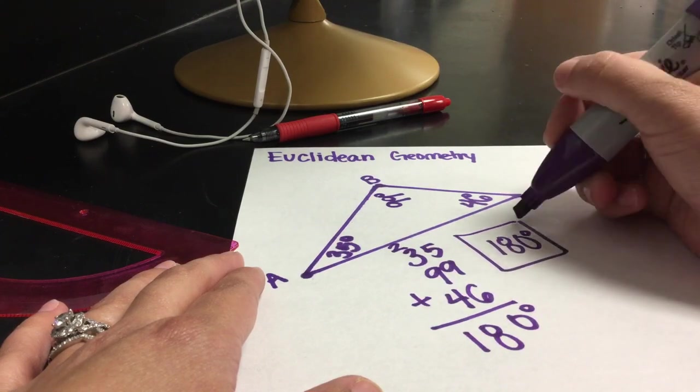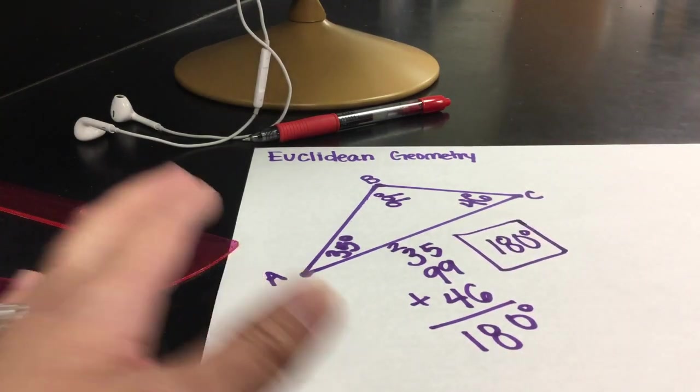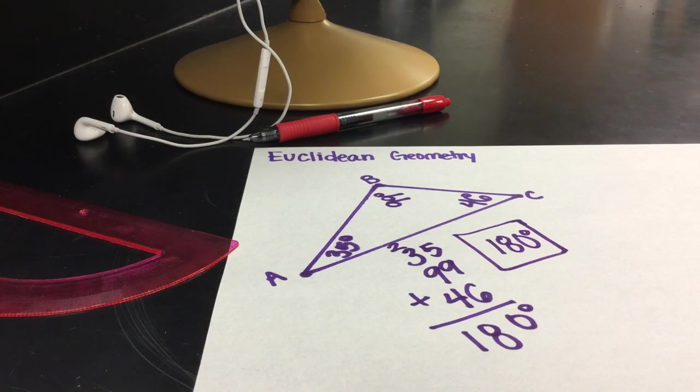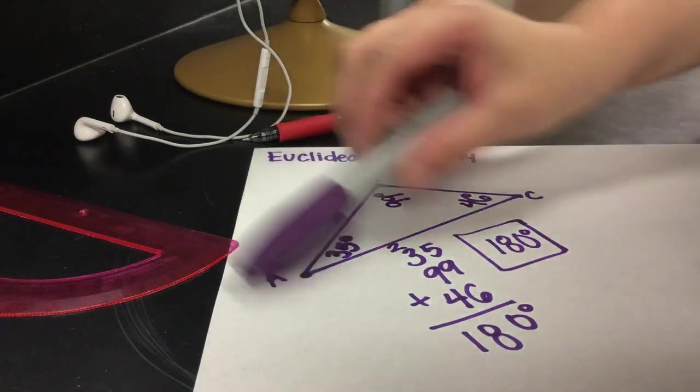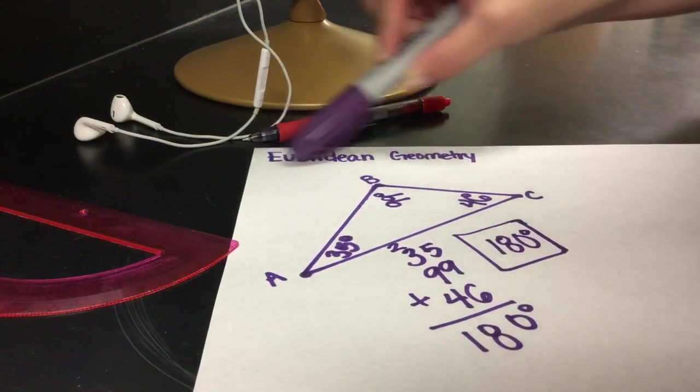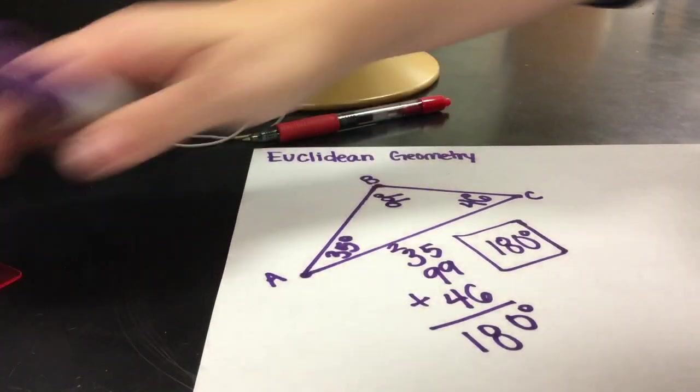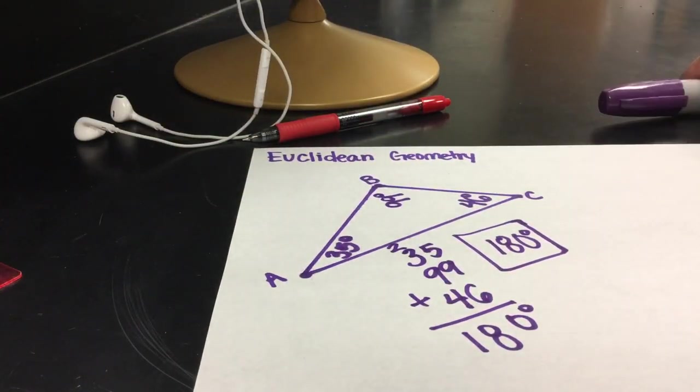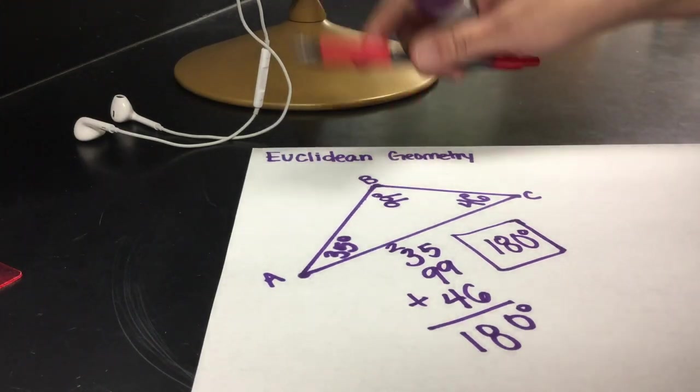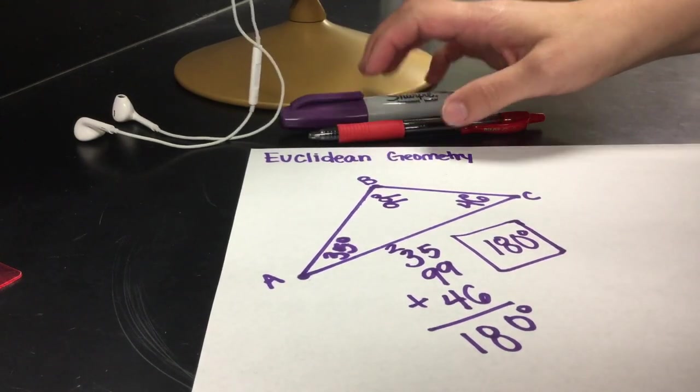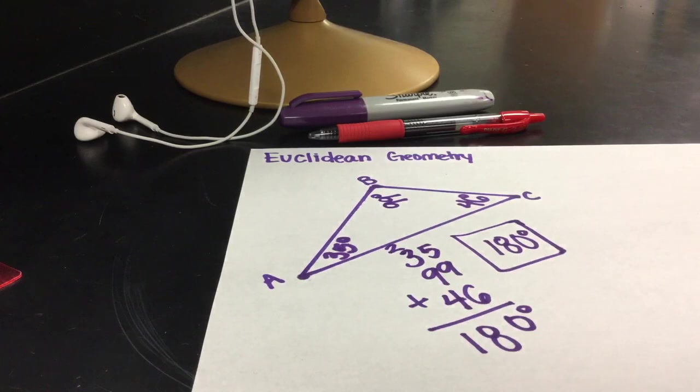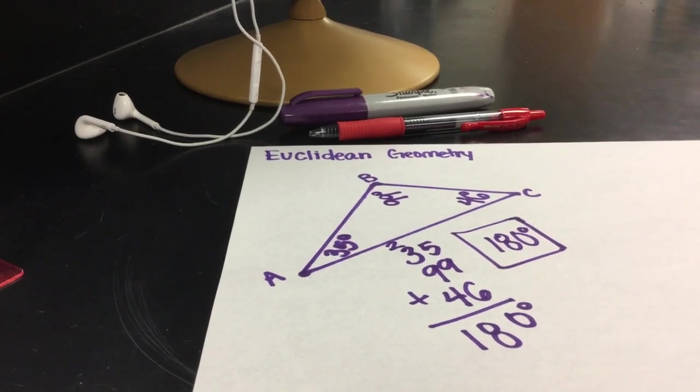Now, we know that that's true because we've already talked about the sum of the interior angles of a triangle. This holds true when we are looking at Euclidean geometry, which is on a flat two-dimensional plane. Now what I want to talk about is something that is more realistic to our planet that we live on.